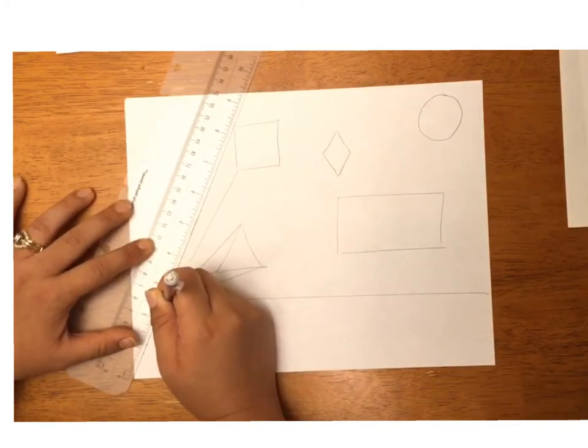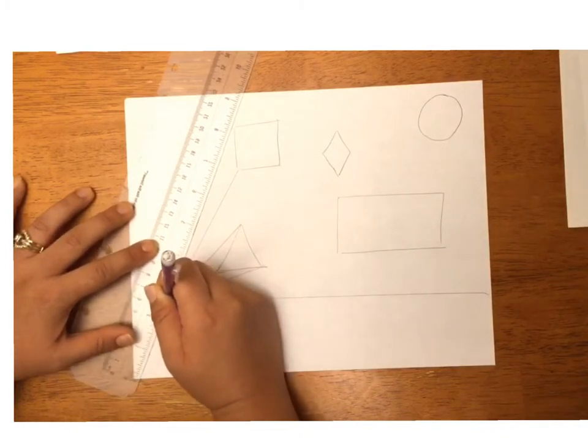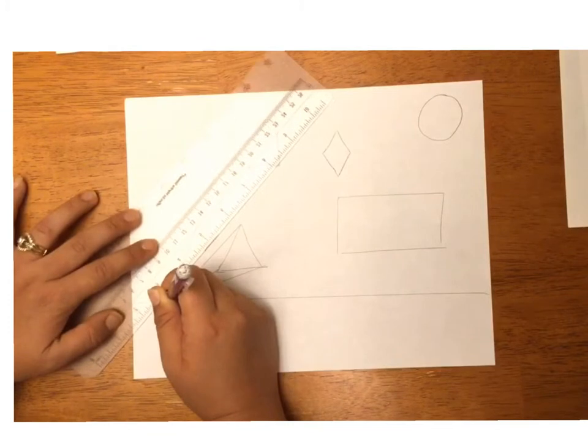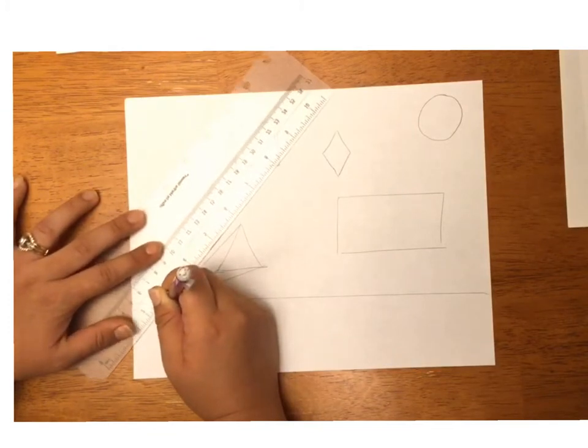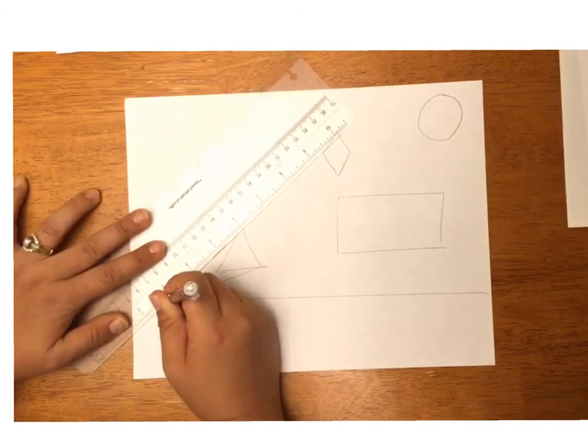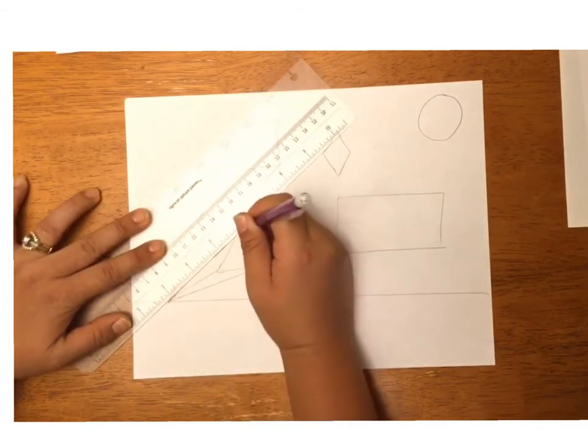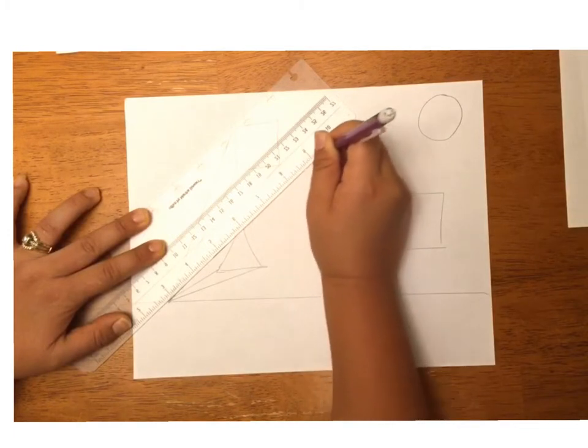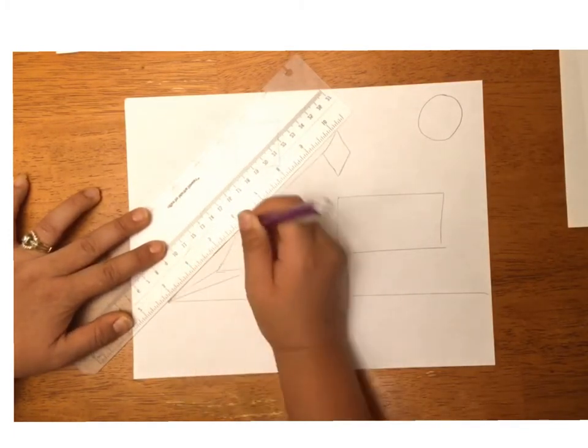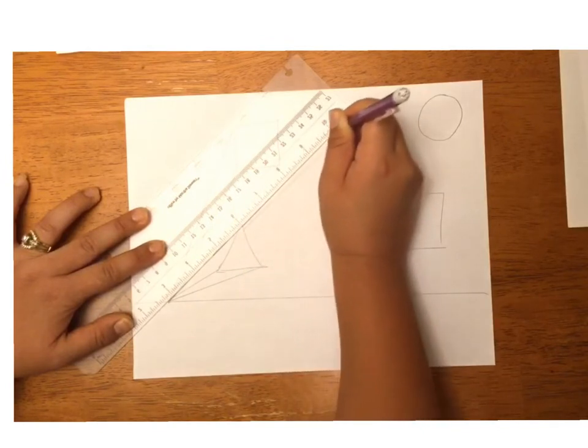The next shape is going to be the rhombus. If you notice, I can't draw a line from the vanishing point to the rhombus because the triangle is in the way. So what I'm doing is making sure that my ruler is lined up with the vanishing point and with the rhombus.